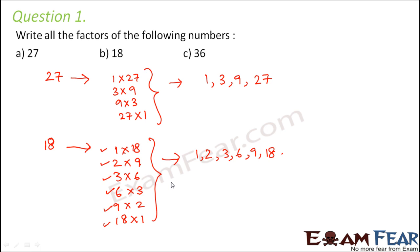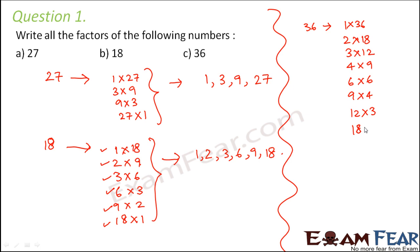Let us now talk about 36. So 36 can be written as 1 into 36, 2 into 18, 3 into 12, 4 into 9, 6 into 6, 9 into 4, 12 into 3, 18 into 2, 36 into 1. So these are the various ways in which you can write 36, which shows that 1, 2, 3, 4, 6, 9, 12, 18 and 36 are the factors of 36.